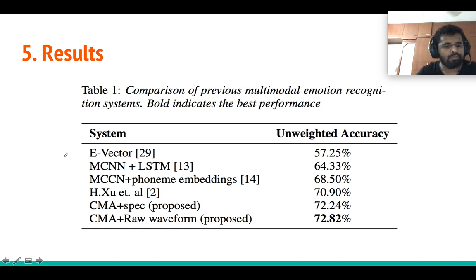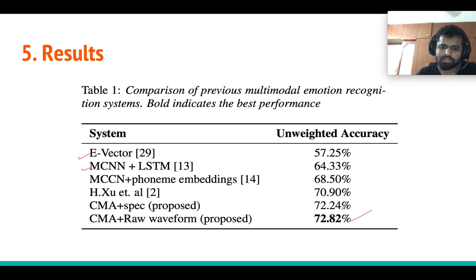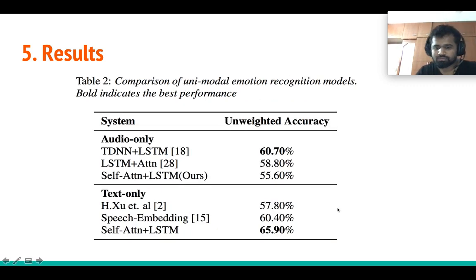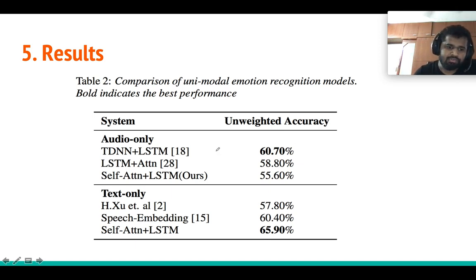In the results, we compare our model with previous multimodal emotion recognition models, including standard i-vector, MCNN-LSTM, and others. Our proposed approach with raw waveform achieves 72.82% accuracy. Without raw waveform — using spectrogram instead — accuracy is slightly lower. For unimodal audio-only methods, the best baseline is a TDNN + BiLSTM model achieving 60.7% accuracy.